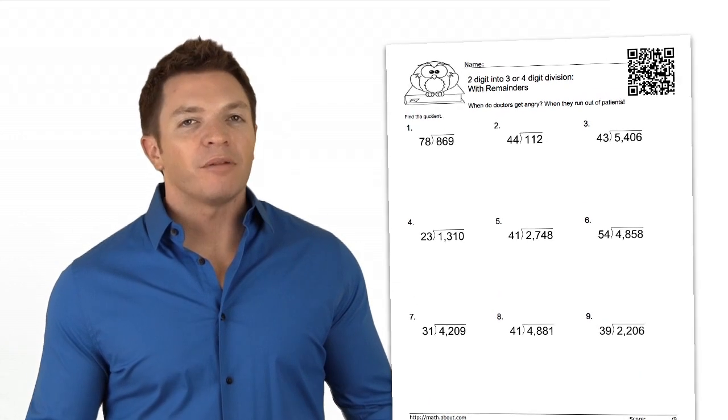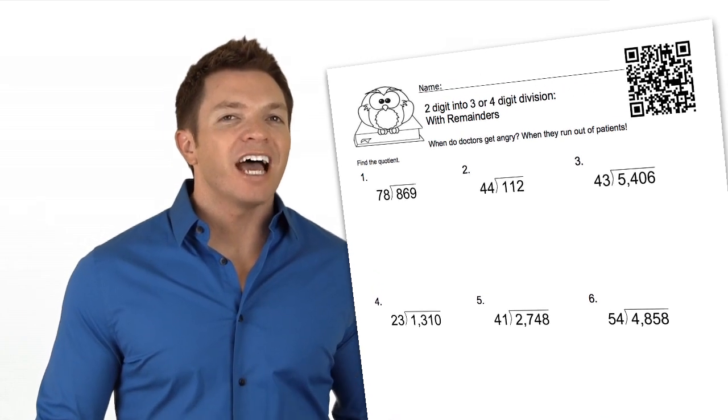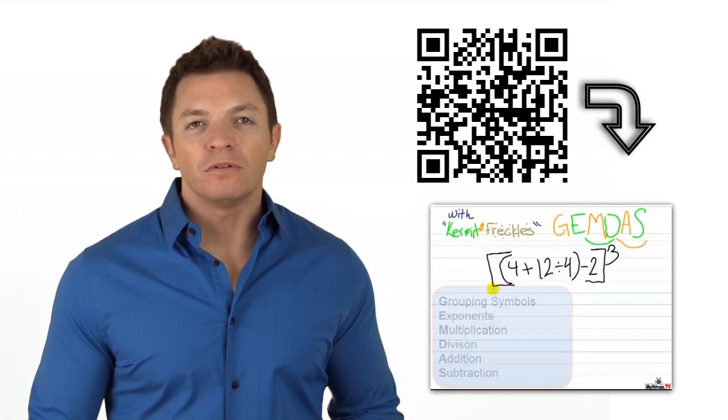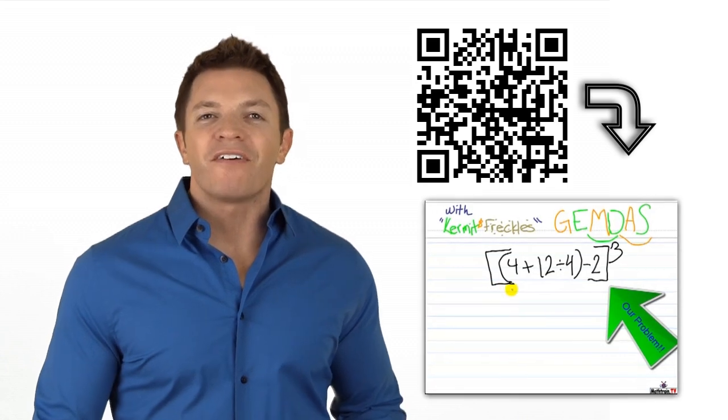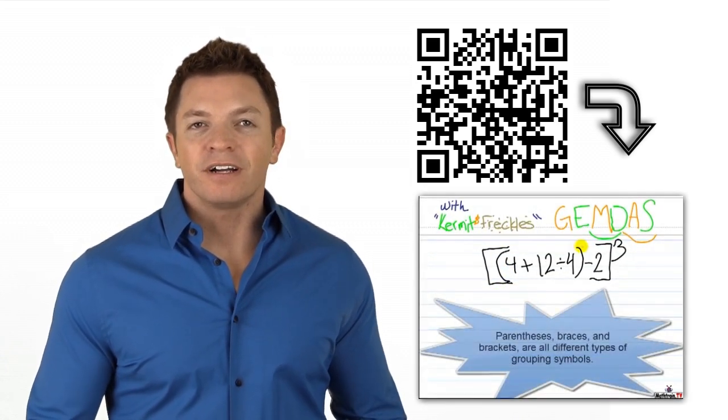Place QR codes that offer extra help on worksheets. A worksheet of long division problems can have a code students can scan that shows them the steps for solving problems like the ones on the sheet. Or, a QR code can go to a video detailing how to solve a similar problem. For instance, this code goes to a video by a middle school student at Mathtrain.tv that reviews the order of operations. The code can be put on an assignment as a reference.